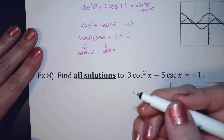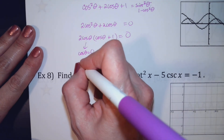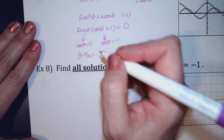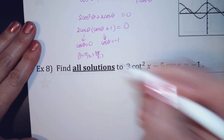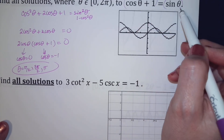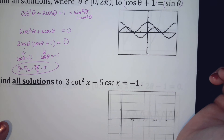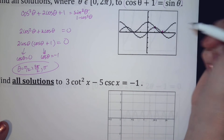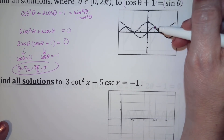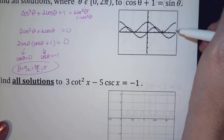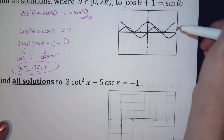When is cosine 0? That happens at pi over 2 and also at 3pi over 2. And cosine is negative 1 at pi. This says from 0 to 2pi. So possible answers are pi over 2, 3pi over 2, and pi.